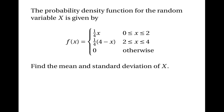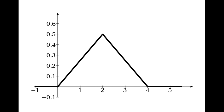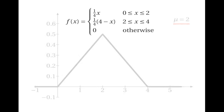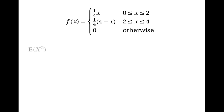Now let's look at another example. The random variable has probability density function f(x) = (1/4)x for x between 0 and 2, f(x) = (1/4)(4 − x) for x between 2 and 4, and 0 otherwise. We want the mean and standard deviation of X. We could use integration, but if you think about what the graph looks like, there's a simpler way. The graph is symmetrical, so we can see straight away that the mean must be 2.